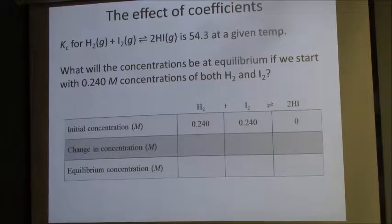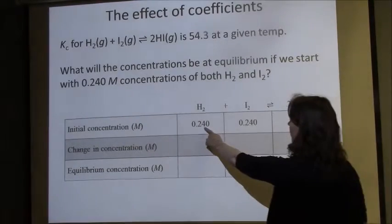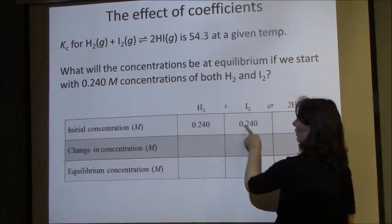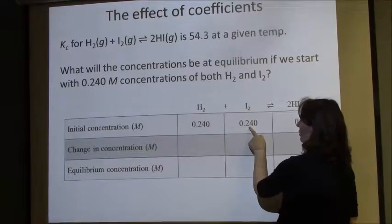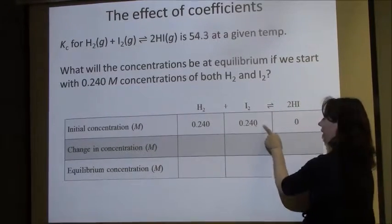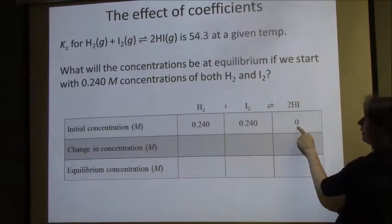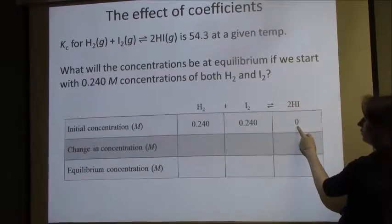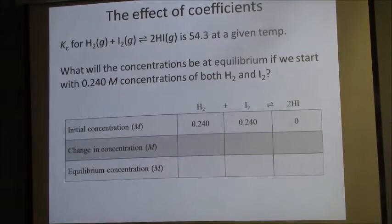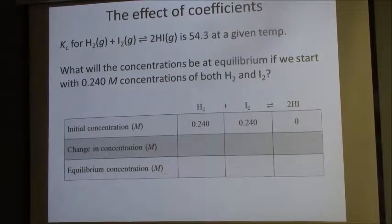So here is my ICE table. Initially, the concentration of H2 is 0.24. Initially, the concentration of I2 is 0.24. And since we don't know any information about HI initially, we're going to assume that it's 0. Now we need to figure out what the change is going to be.